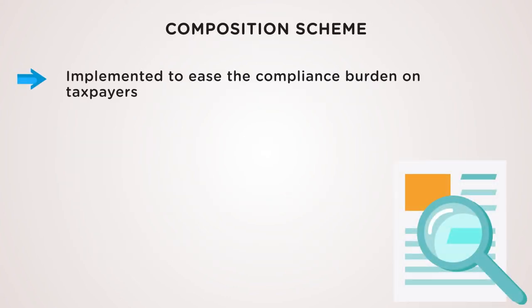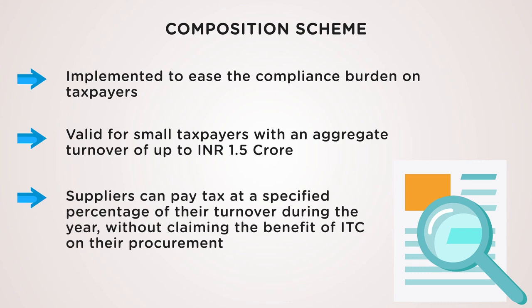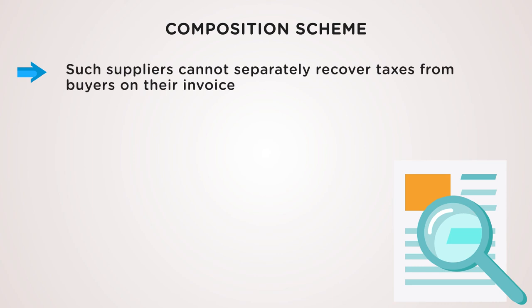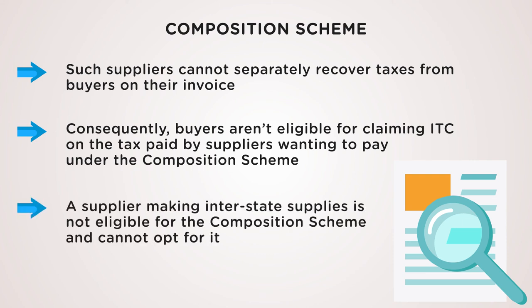The composition scheme under GST was implemented to ease the compliance burden on taxpayers. It is valid for small taxpayers with an aggregate turnover of up to INR 1.5 crore. Suppliers can pay tax at a specified percentage of their turnover during the year without claiming the benefit of ITC on their procurement. Such suppliers cannot separately recover taxes from buyers on their invoice, and consequently these buyers aren't eligible for claiming ITC on the tax paid by the suppliers. A supplier wanting to pay under the composition scheme and making interstate supplies is not eligible for the composition scheme and cannot opt for it.